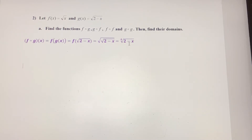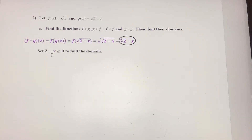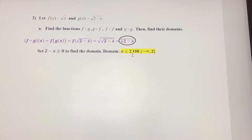Now for the domain of f of g, 2 minus x has to be non-negative. We set it greater than or equal to zero, and when we solve that, we get x is less than or equal to 2. We can also write this in interval notation as negative infinity to 2, including 2. So that's f of g.